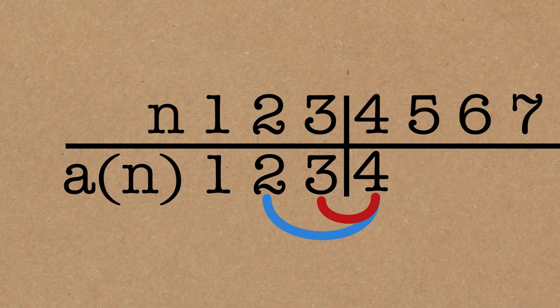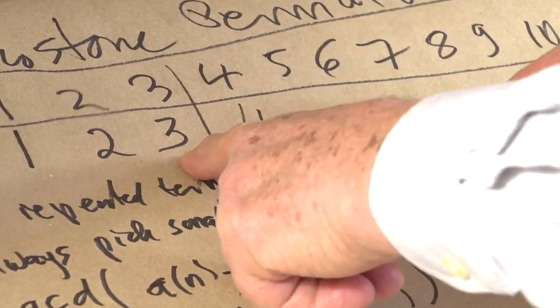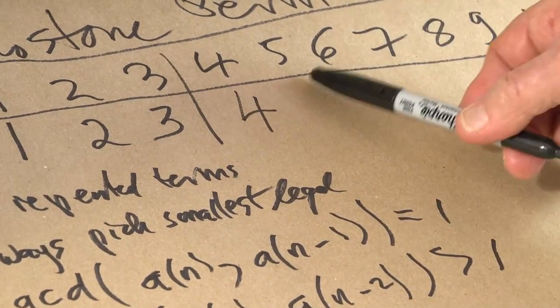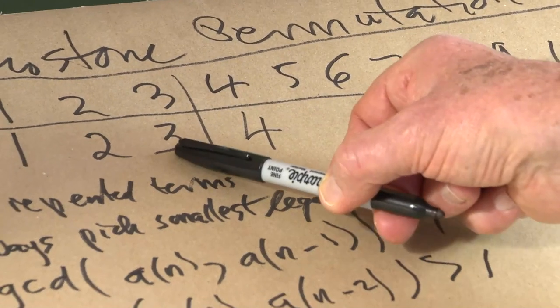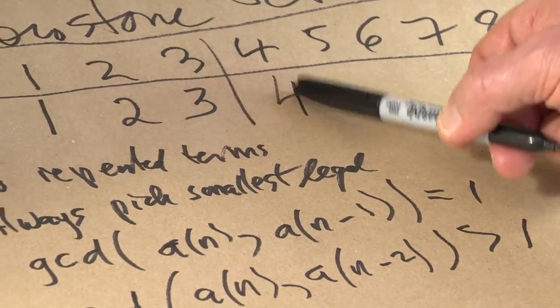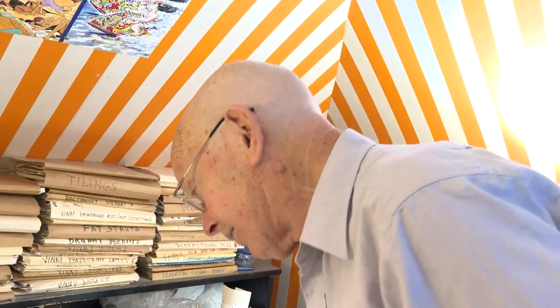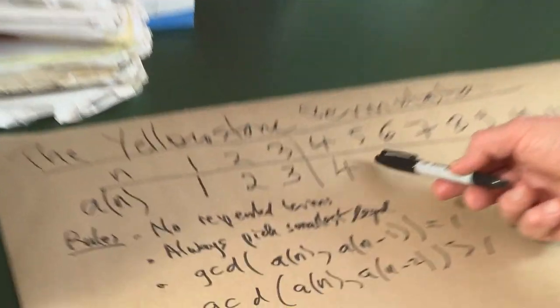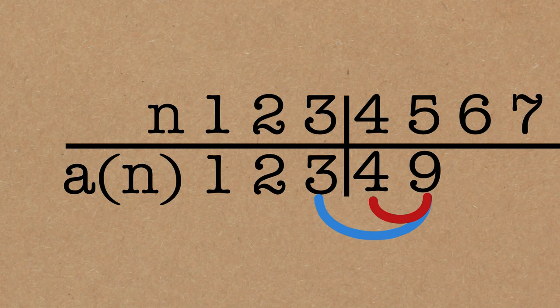Now we're missing 5, but we can't put a 5 here, because 5, even though it's relatively prime to 4, doesn't have a common factor with 3. So we can't put a 5. We need a multiple of 3 to have a common factor with 3. So 6 would work, except 6 and 4 have a common factor of 2, so we can't put a 6. So 7, 8, 9. 9 works. 9 and 3 have a common factor of 3, and 9 and 4 are relatively prime, and no smaller number works. So the fifth term is 9.